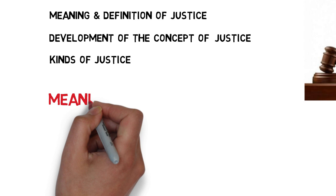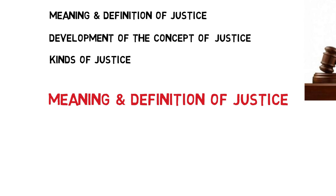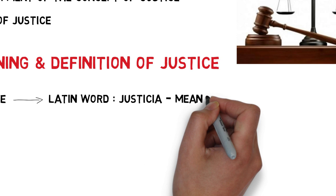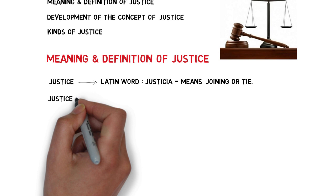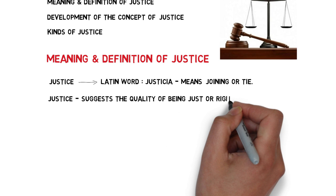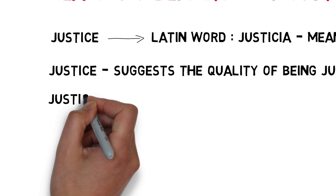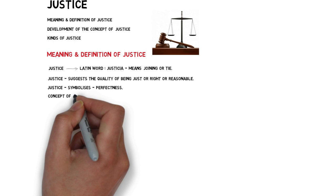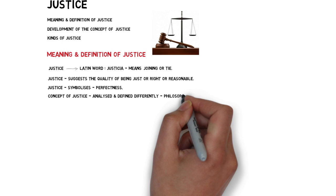Let us take first the meaning and definitions of justice. The term justice is derived from the Latin word 'justicia,' which means joining or ties. The term justice suggests the quality of being just, right, or reasonable. Therefore, justice symbolizes perfectness and is also reflected in absolute truth.